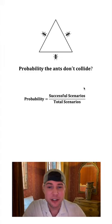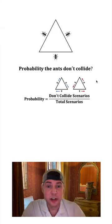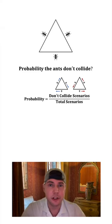Probability is successful scenarios over total scenarios. Another word for successful scenario is they don't collide. Well, there are two scenarios where they don't collide. Either all the ants go clockwise, or all the ants go counterclockwise. So we can change the numerator into a two.